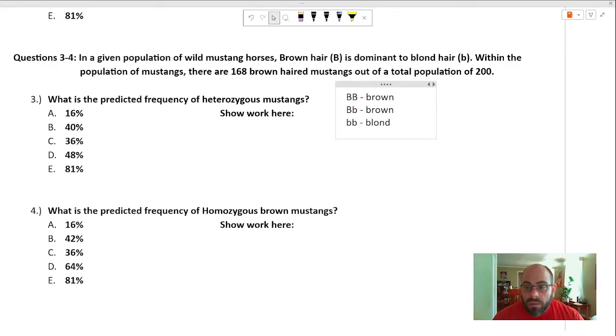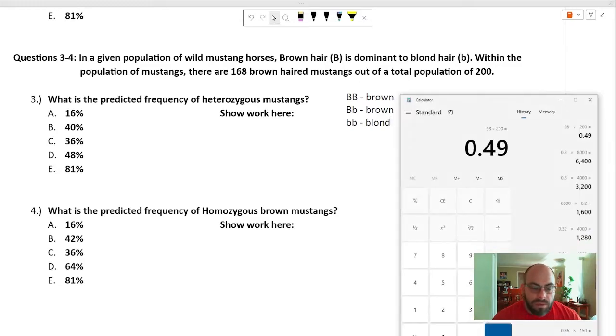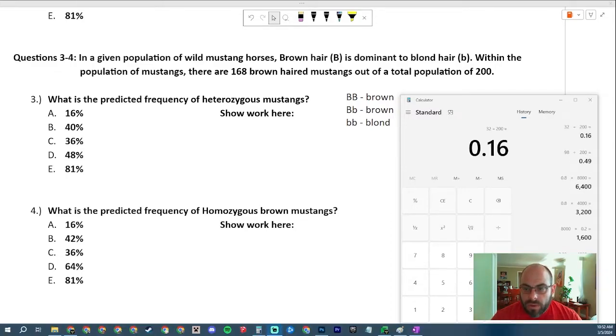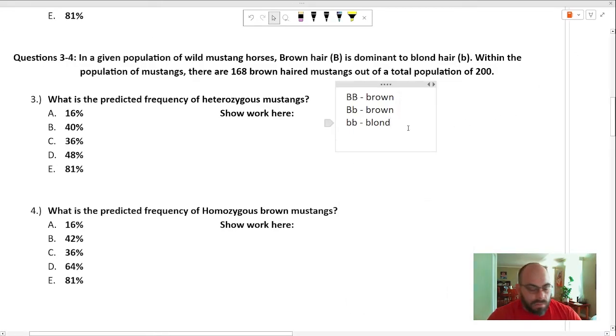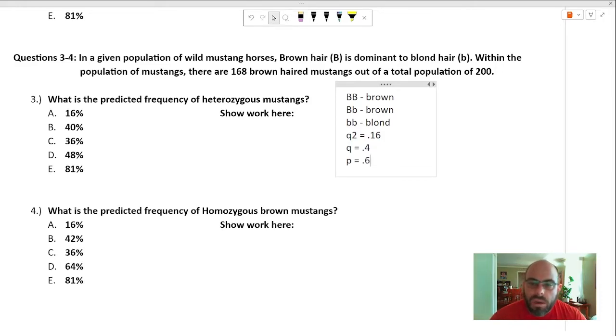Well, if there are 168 brown haired mustangs in the population, then there are 200 minus 168 blonde haired mustangs in the population, which is 32. And I know that the percentage of blonde haired individuals in this particular population is equal to q squared. And so I know that 32 divided by 200 is equal to q squared. All of a sudden, I have something to do. 32 divided by 200 equals .16. That's equal to q squared. Let's go over here and do some math magic. .16, q equals then .4 and p then equals .6. And we have the secrets of the world unlocked for us.